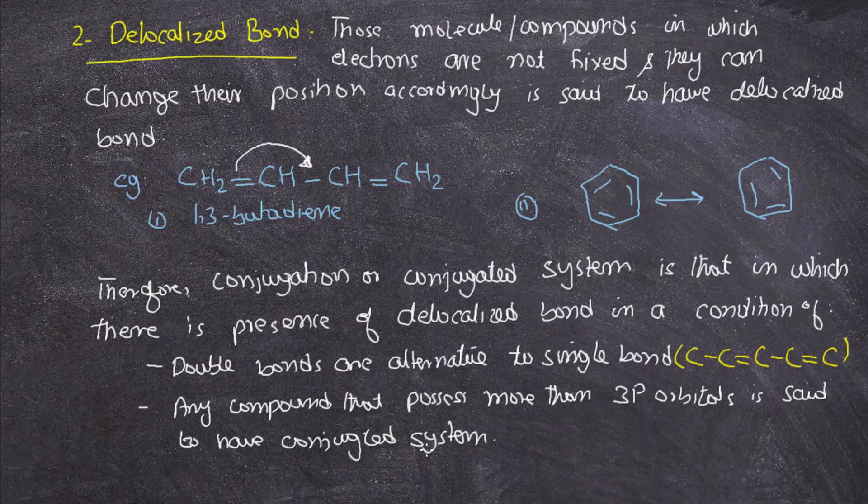How can we say this compound is conjugated or not? Double bonds must alternate to single bonds. Any compound that possesses more than three p orbitals is said to have a conjugated system.